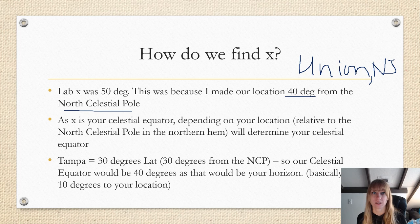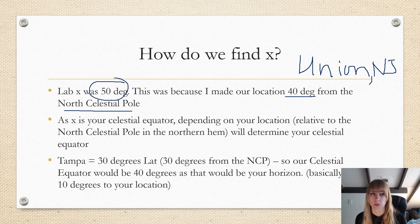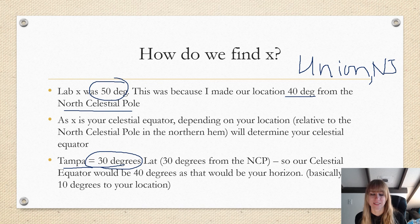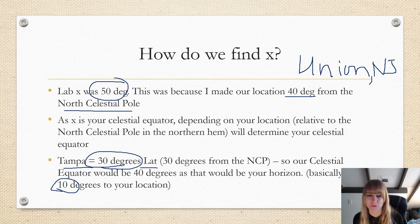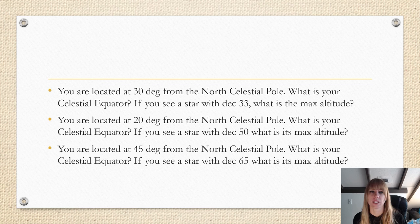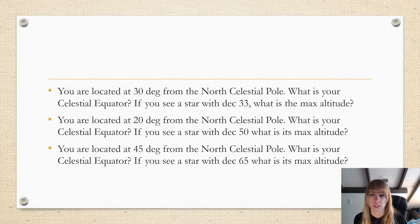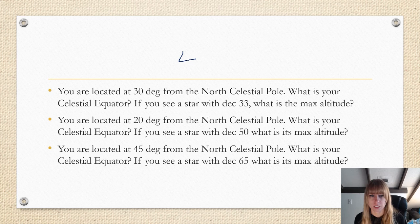Where we are right now is about 27-30 degrees. So Tampa is 30 degrees latitude from the north celestial pole, and I believe Ruskin is 27. So X is your celestial equator depending on your location relative to the north celestial pole in the northern hemisphere, which will determine your celestial equator. Because Tampa is 30 degrees latitude, we add 10 to it and we get 40 degrees as that would be your horizon. Basically 10 degrees plus your location. So if you are located at additional spots, you're located 30 degrees from the north celestial pole, what is your celestial equator? We're going to add 10, so we are 40 degrees. And if we see a star with a declination of 33, what would its max altitude be?